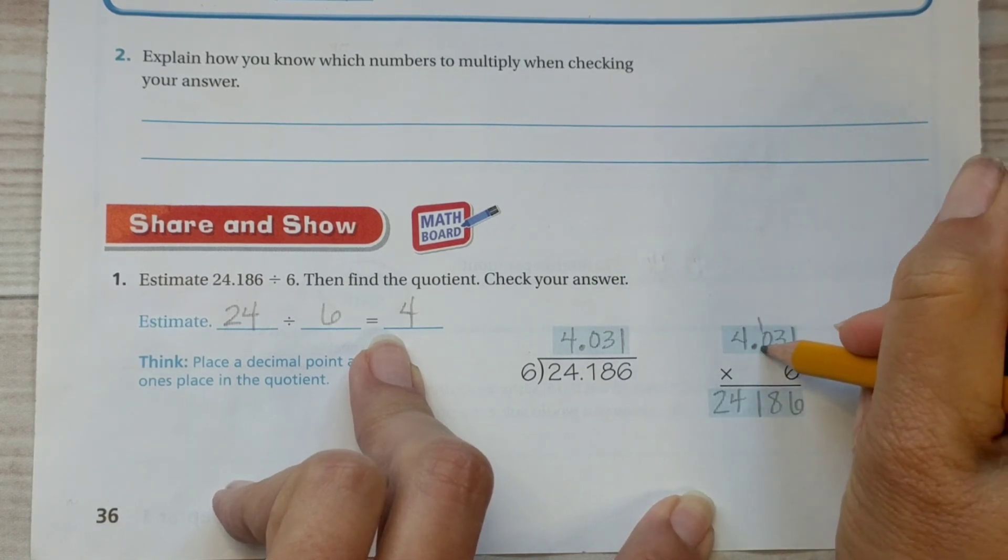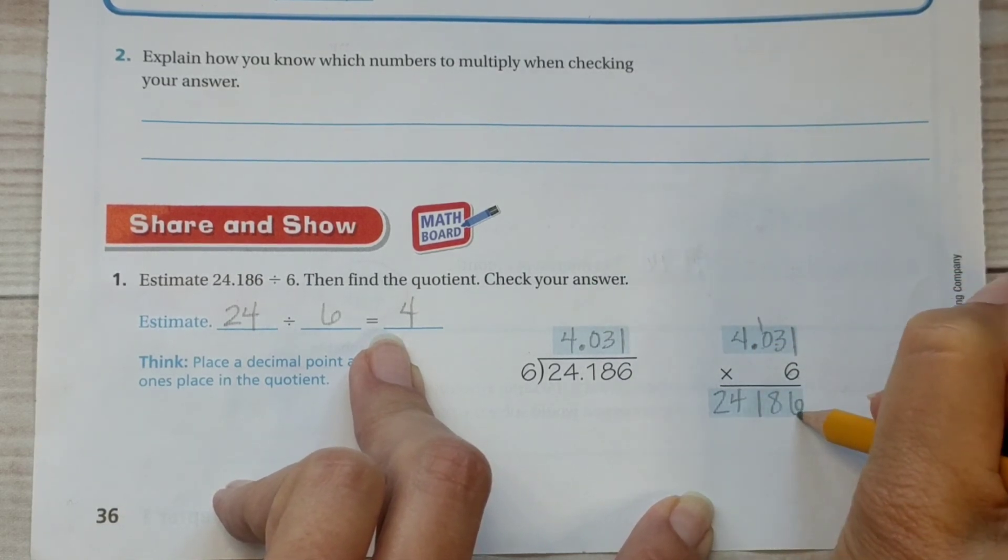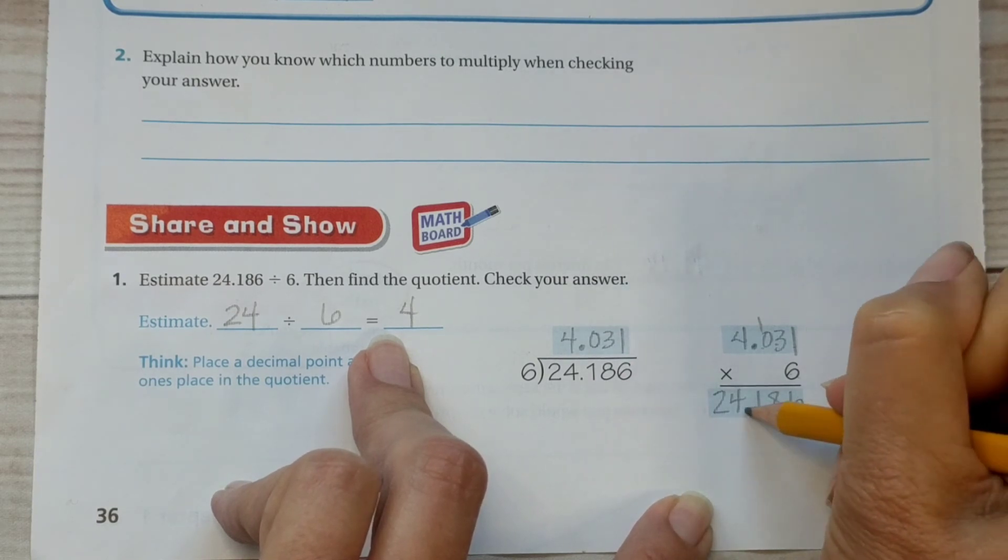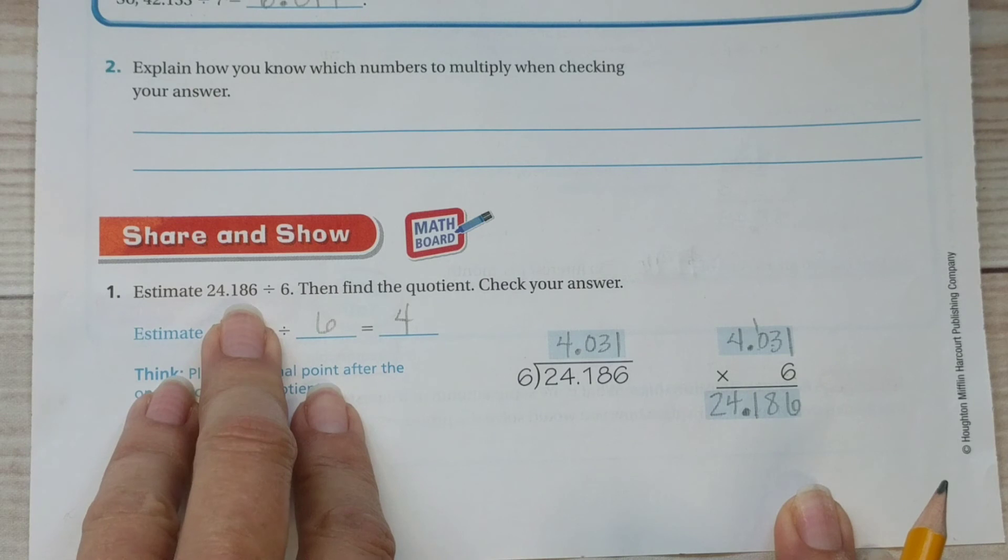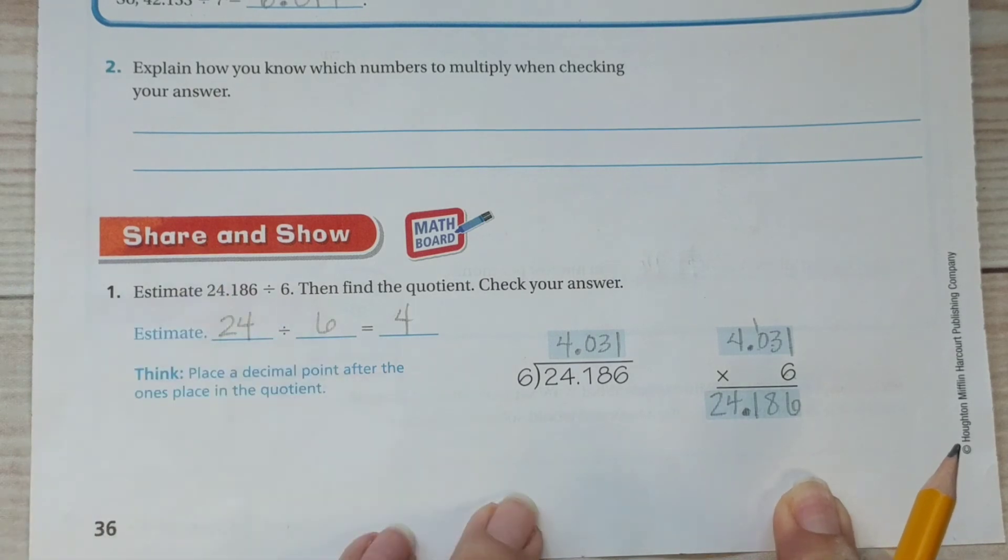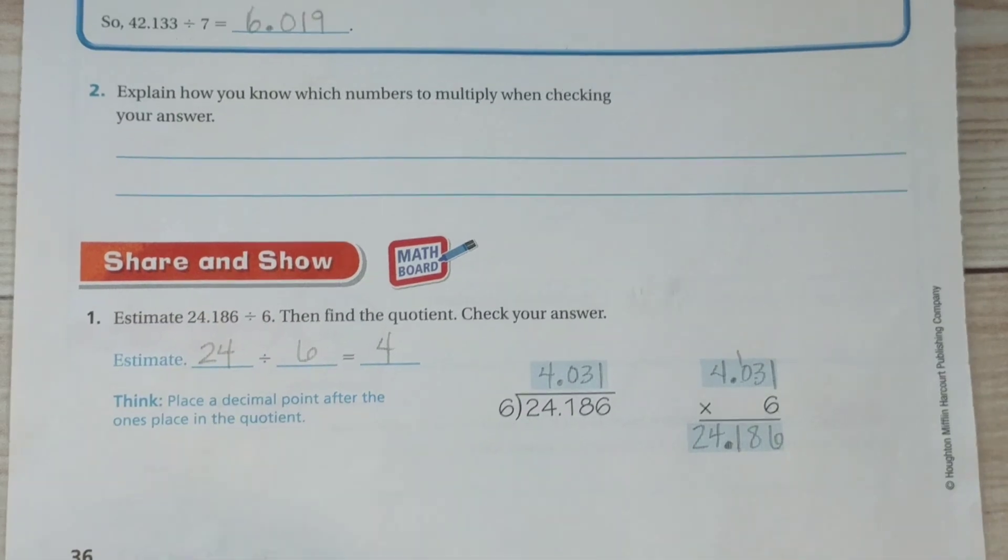There are one, two, three numbers behind the decimal. Therefore, there needs to be one, two, three numbers behind the decimal here also. So, we end up with twenty-four and one hundred eighty-six thousandths, which was our original problem, therefore we did our math correctly.